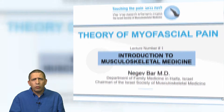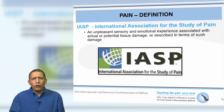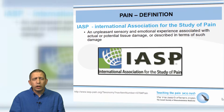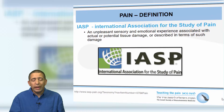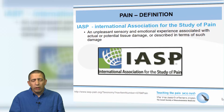Let's start with some pain definition and classification. According to the IASP, the International Association for the Study of Pain, pain is defined as an unpleasant sensory and emotional experience associated with actual or potential tissue damage, or described in terms of such damage.